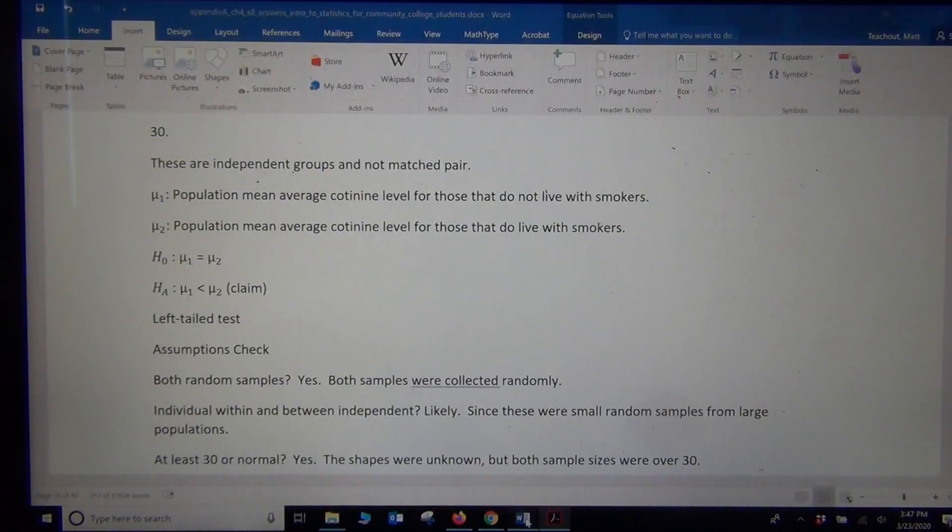Alright, so let's take a look. So again, our μ1 is the population mean average cotinine level for those that do not live with smokers. μ2, population mean average for those that live with smokers. My claim is that μ1 is less than μ2. That's my claim. My null hypothesis is going to be μ1 equals μ2. Or you could write μ1 is greater than or equal to μ2 if you want. This will be a left-tailed test.